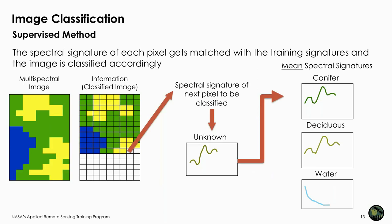With this information, one is able to build a training dataset of mean spectral signatures for the various classes of interest. The classification algorithm then uses this information to match unknown pixels with the mean spectral signatures of the classes of interest and identify the best match or class for each pixel.